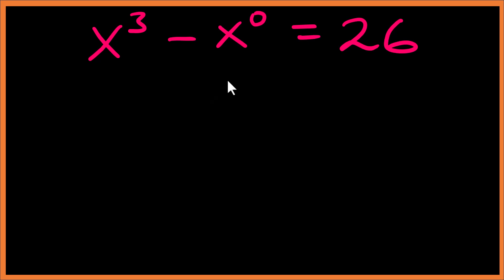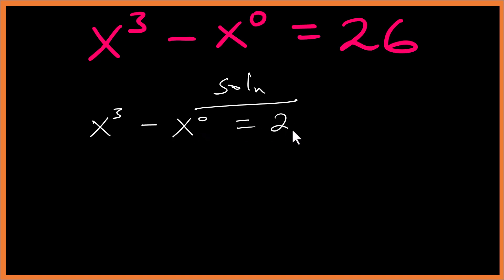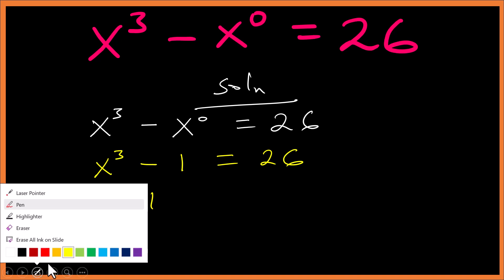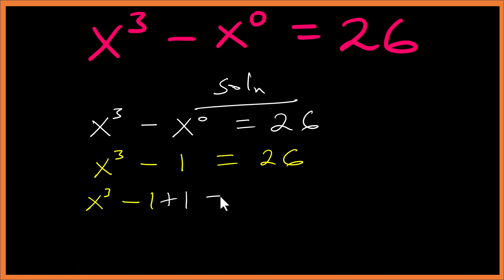So x cubed minus x to the power 0 equals to 26. Now x to the power 0 is 1, so our next step is x cubed minus 1 equals to 26. We can add 1 to both sides: x cubed minus 1 plus 1 equals to 26 plus 1, giving us x cubed equals to 27.